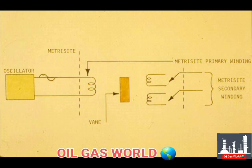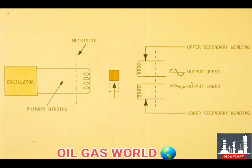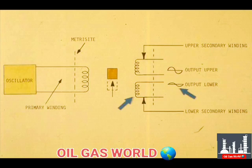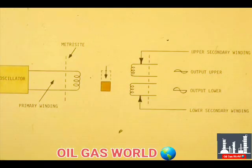This schematic shows the metricyte and the vane. The metricyte has a primary winding that is excited by an oscillator. Assume the metricyte rises. The transformer coupling between the primary and the upper secondary winding increases, so the output voltage of the upper winding increases. The transformer coupling between the primary metricyte winding and the lower secondary winding decreases, so the output voltage of the lower winding decreases. If the metricyte vane lowered due to a level change, the output of the upper coil would decrease and the output of the lower coil would increase.